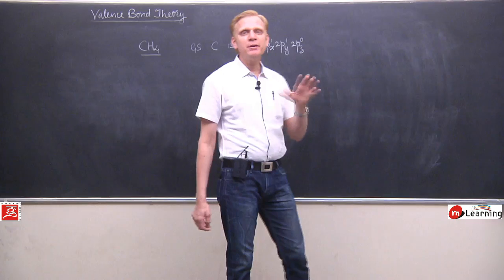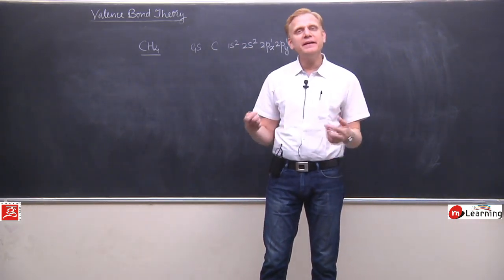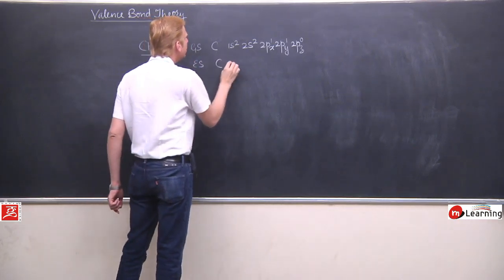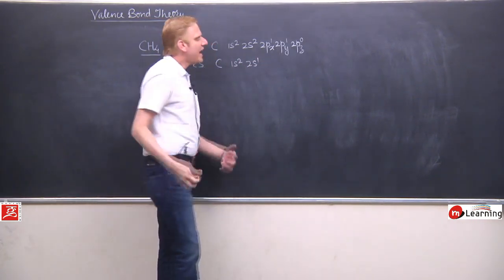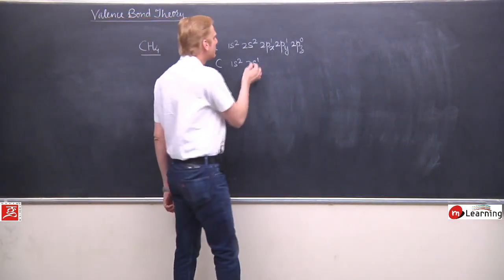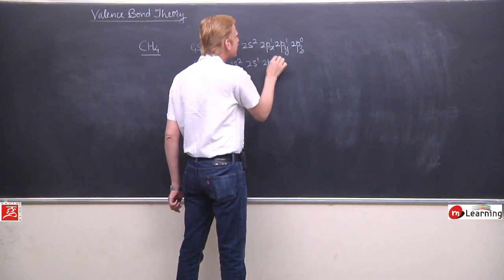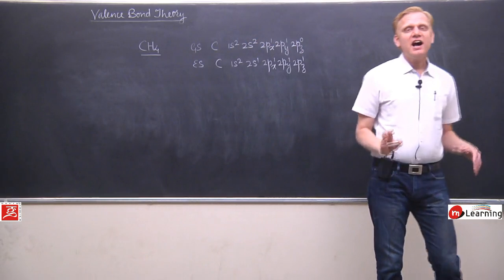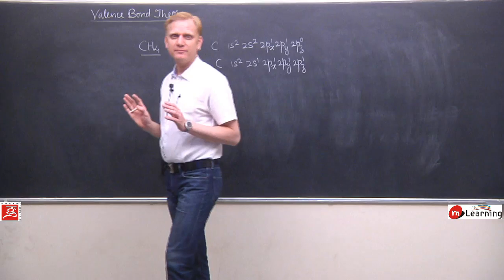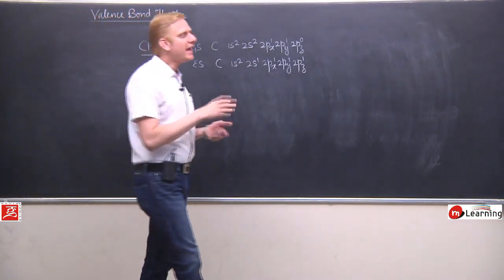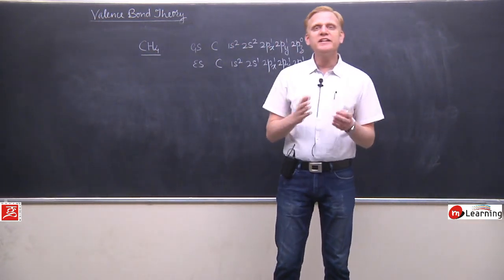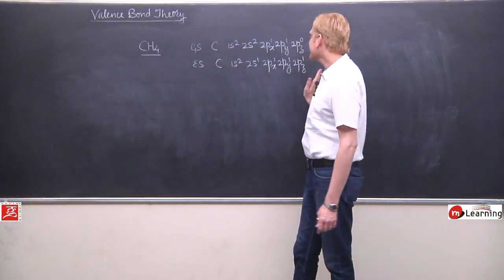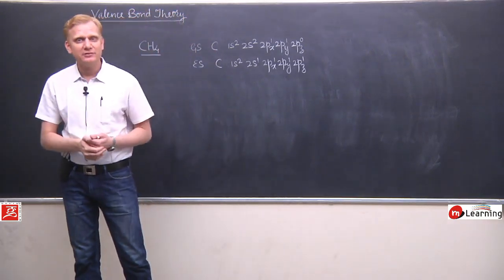Kai elements mein valency ke according number of unpaired electrons nahi milte. Unko lekar VBT ne ek solution nikala — ki aise case mein atoms apni ground state chhodke ek excited state mein convert ho jaate hain. Excited state matlab the atoms now become ready for bonding. 2s wala ek electron ek excited state ko achieve karte hue 2p orbital mein promoted bataya jaata hai. VBT ne introduce kiya the concept of electronic excitation — excited state achieve karke atom apni valency ke barabar bond formation kar sakta hai.